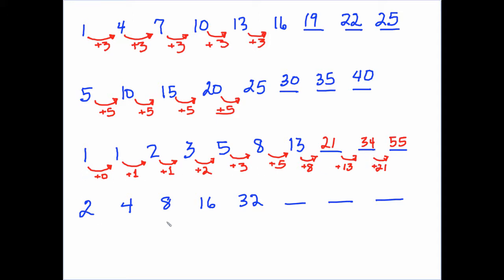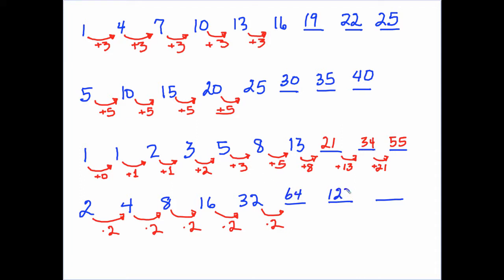This last sequence — you'll notice that maybe you add 2, but maybe not. If you multiply by 2, that seems to work. Multiply each term by 2, and then it's easy to extend the sequence by multiplying by 2 to get 64, multiply by 2 to get 128, and then 256.